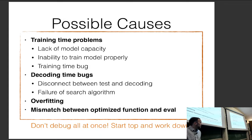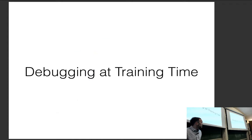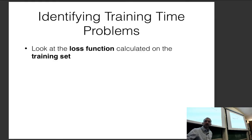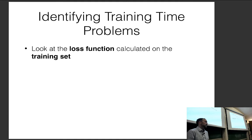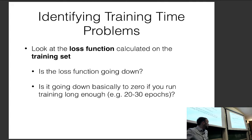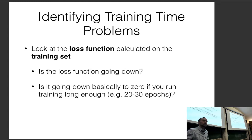My suggestion is we don't want to debug all of them at once; we should start at the top and work down. To identify training time problems, take the training set and make sure the loss function your model is optimizing is going down on the training set — not only going down but going down basically to zero if you run for many epochs, like 20 or 30.